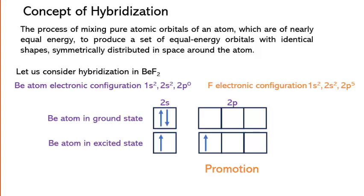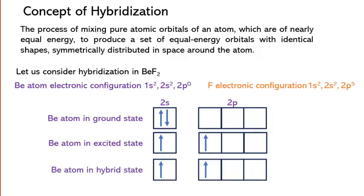But we know that we have two hybridized orbitals for bonding. That means 1s and 1p orbital mix and create sp hybridized orbitals that are of equal energy, similar shape, and are distributed around the atom symmetrically. These sp hybridized orbitals will overlap with orbitals of two fluorine atoms and form bonds.